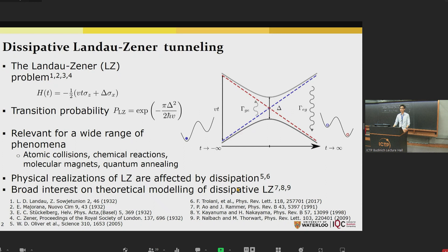This problem is relevant for a wide range of physical phenomena including atomic collisions, chemical reactions, molecular magnets, and of course quantum annealing. Physical realizations of the Landau-Zener problem are always affected by dissipation or coupling to the environment. And there have been a broad interest on theoretical modeling of the dissipative Landau-Zener problems.